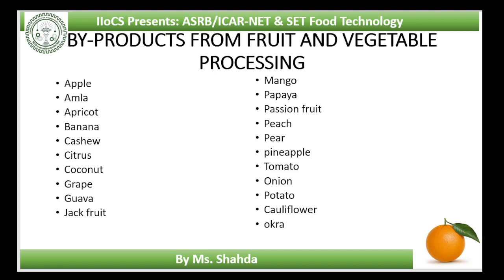Tomato is an important vegetable crop available around the year, and outranks all other vegetables except potato in popularity and value. It is grown universally in farmers' fields, home gardens and greenhouses. Peel, seeds and pumice are the waste obtained during processing of tomato into juice, concentrate, ketchup and sauce. When tomato is canned in lime and sugar solution, some peel and seeds are obtained as wastes.